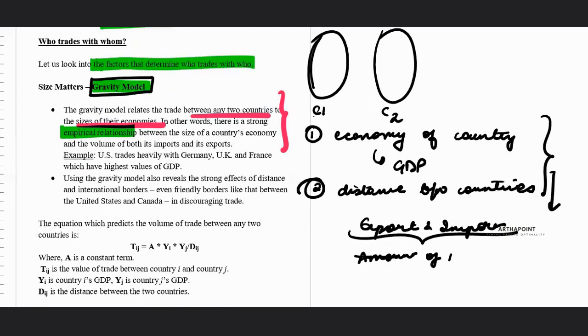So in particular, let's take an example. For example, we have seen that US trades heavily with Germany, UK, France, and these are the countries which have the highest value of GDP, which means US trades with those countries where the GDP is high.